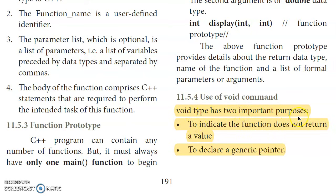Third question — about the void type: void type has two important purposes. First, to indicate the function does not return a value. Second, to declare a generic pointer. These are the two important purposes of void.